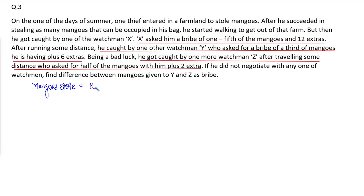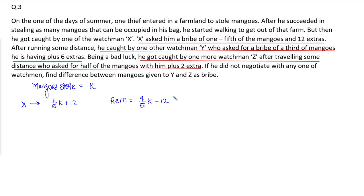The number of mangoes given to the first watchman X is one-fifth of k plus 12. After this step, how many mangoes are remaining? Four-fifths of k minus 12. If I give one-fifth of k, four-fifths of k remain, but I also give 12 mangoes extra, so I subtract 12.